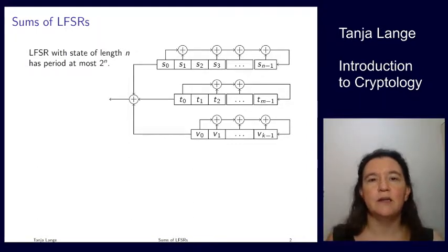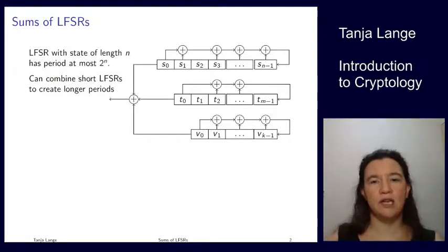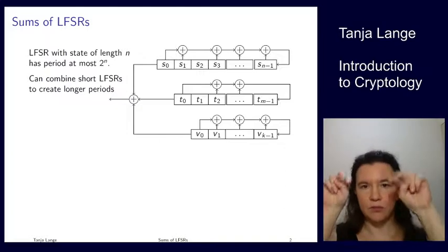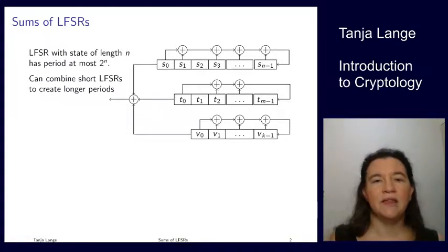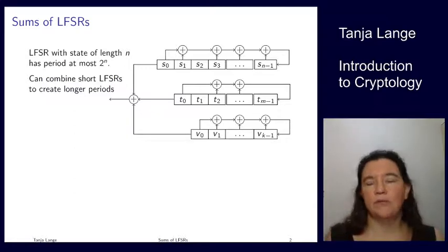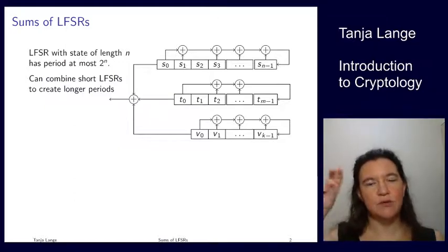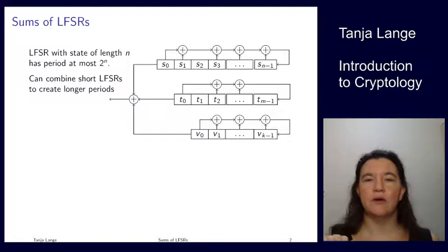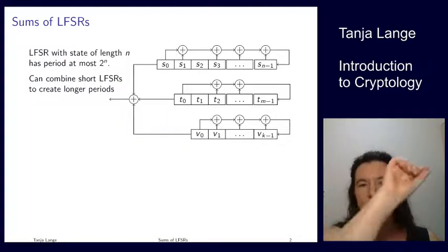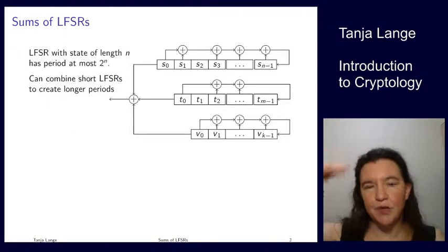So we're taking here one of length n, one of length m, and one of length k. Each of them has their own feedback, has their own pins where they draw from, and then at the end we sum up their outputs. That's just a sum of bits and we're gonna get whatever this result is as our output. So each clock cycle, each of those advances one to the left, outputs one bit, those get added up, and on the right hand side each of those feeds back the combination of the bits where they're drawing from.